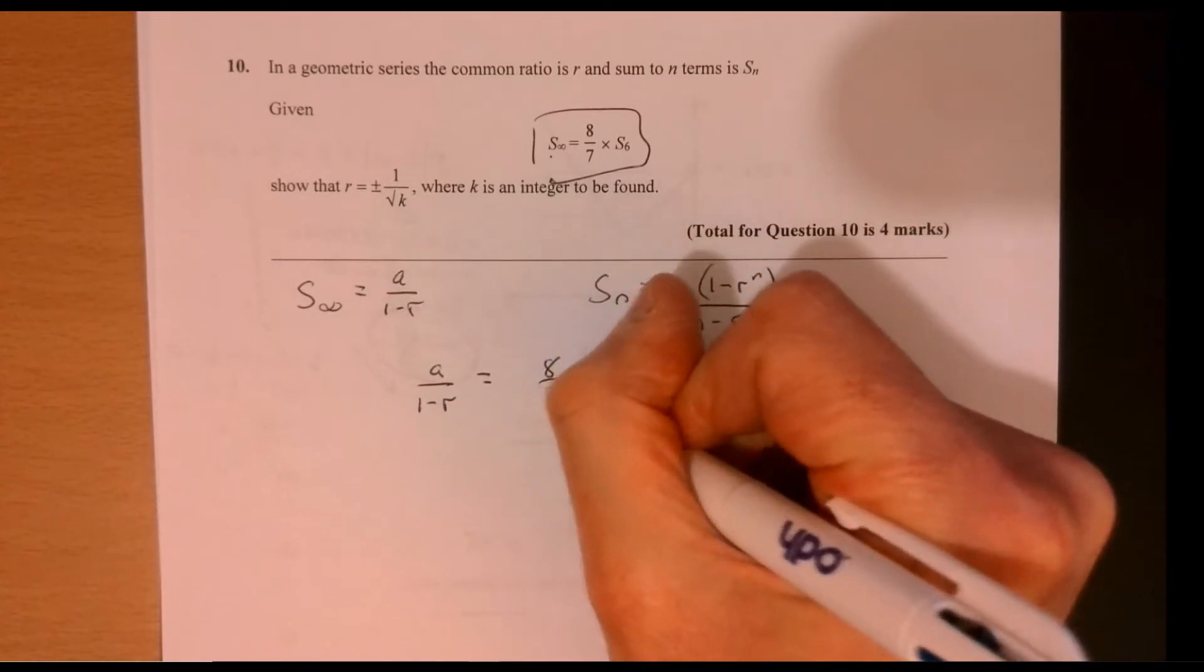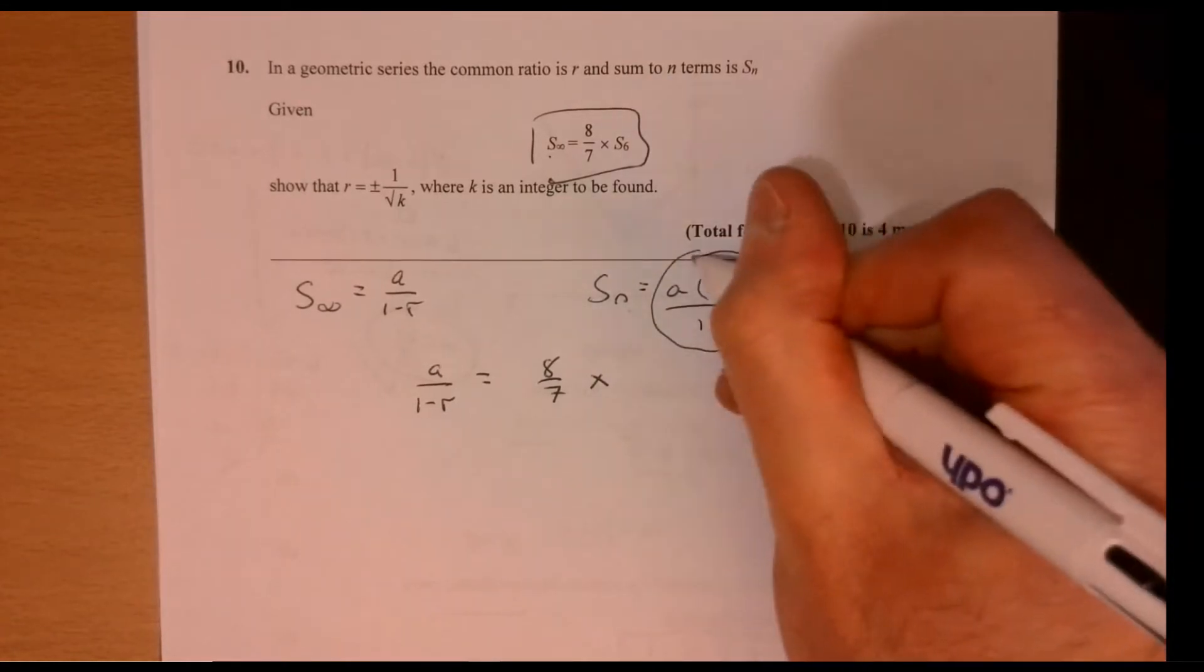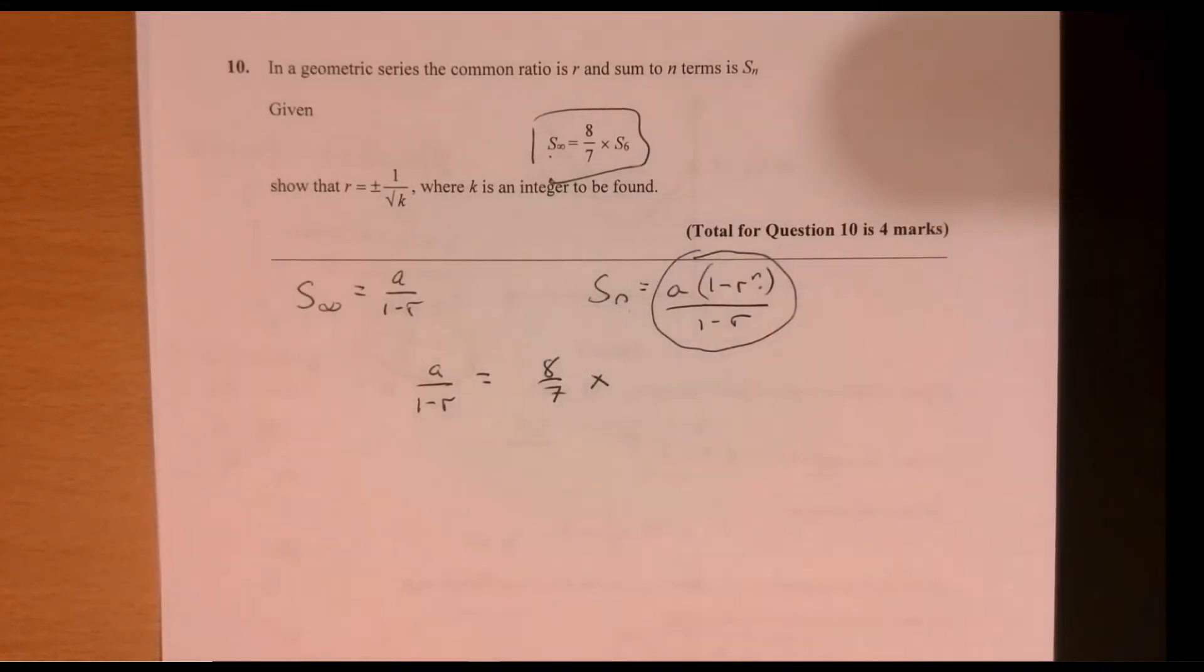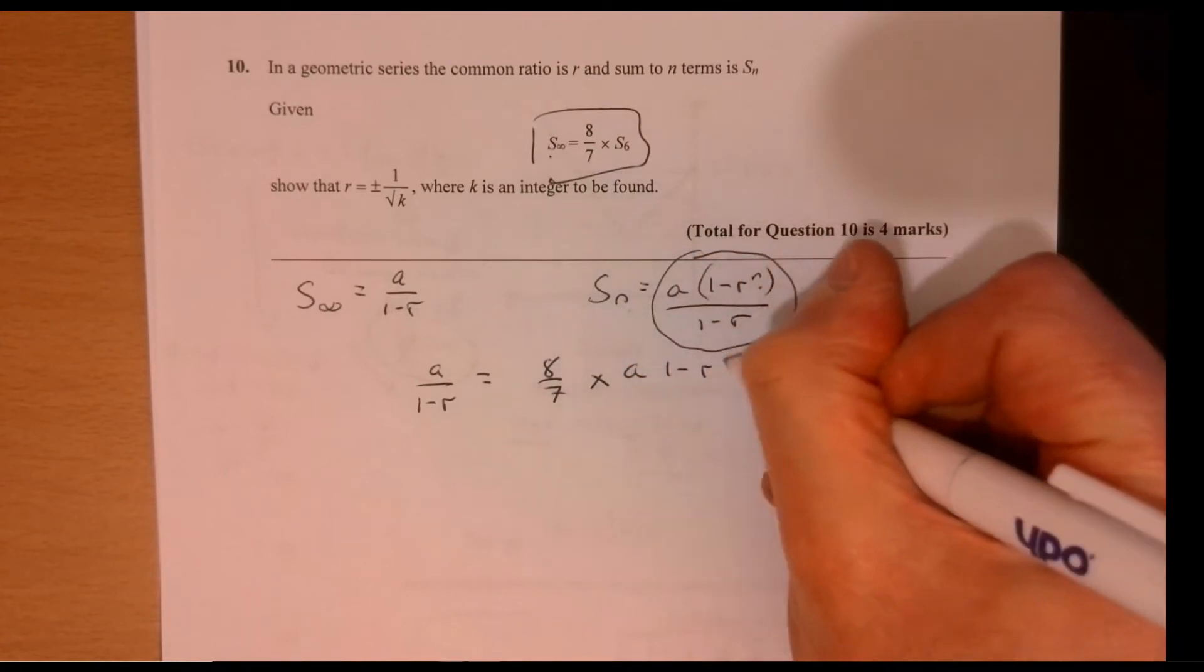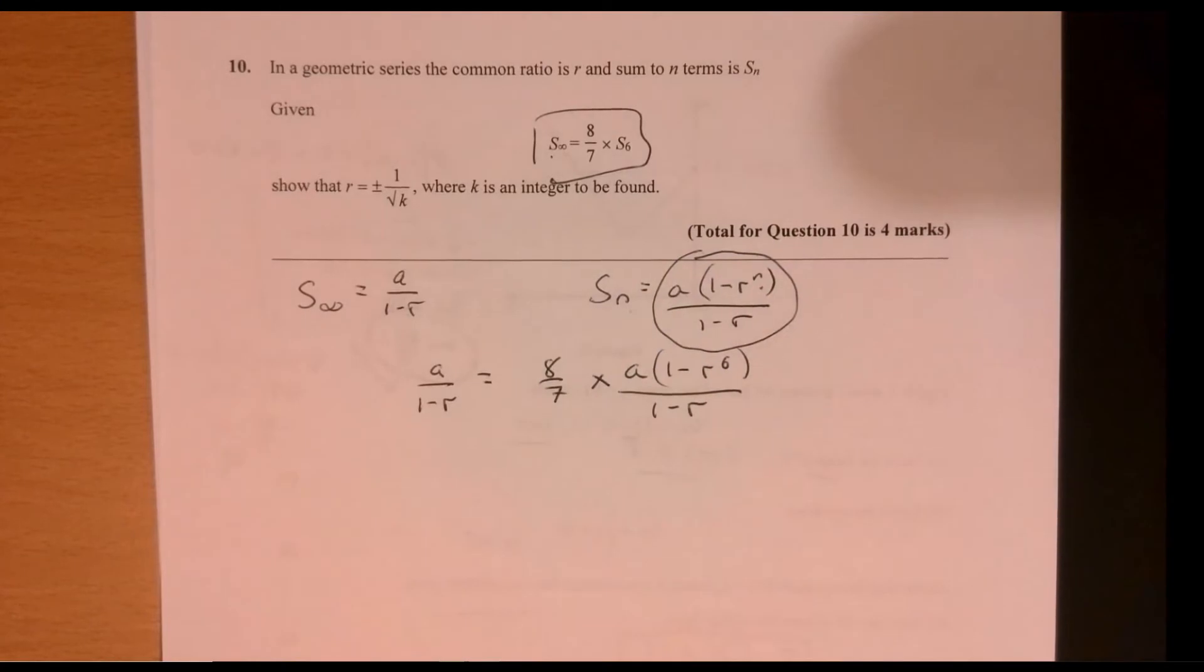And then I've got 8 over 7 multiplied by S6. So let's just put a 6 here. So that gives me A, 1 minus R to the 6, over 1 minus R.